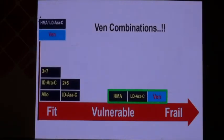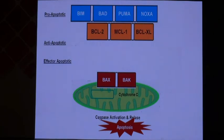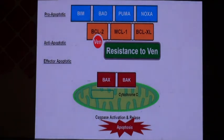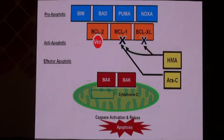Can we consider venetoclax combinations? Yes. Why not combine hypomethylating agents or low-dose cytarabine with venetoclax? Venetoclax selectively inhibits BCL-2, but the cell has other anti-apoptotic machineries including MCL-1 and BCL-XL. If venetoclax blocks BCL-2, the cell might rely on MCL-1 or other proteins, inducing resistance. The strategy is to use conventional drugs that block these other anti-apoptotic proteins, including cytarabine and hypomethylating agents, which can selectively attack them.